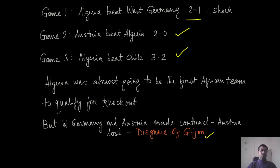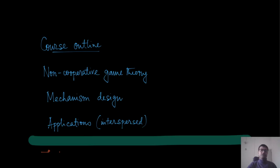This behavior cannot be blamed entirely on the players — they essentially played according to the rules. The problem lies in the design of the tournament itself. Though changes have been made at the football World Cup level — such as the last two matches in a group now happening simultaneously at different venues — this does not completely eliminate the problem. A better mechanism is needed that makes such manipulative actions non-beneficial for the players.